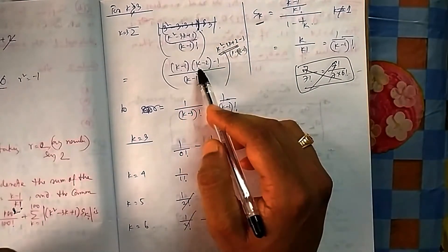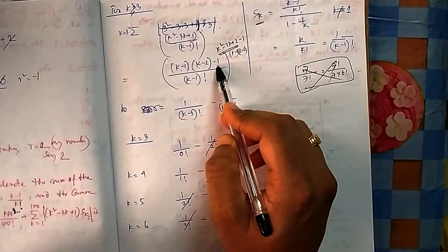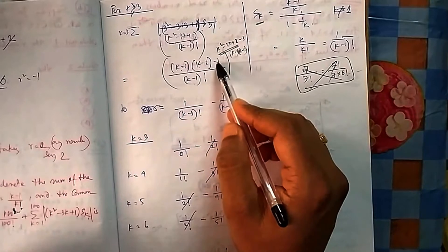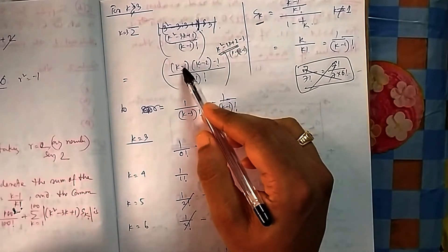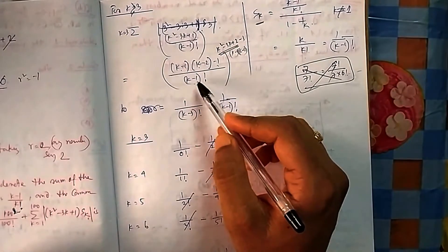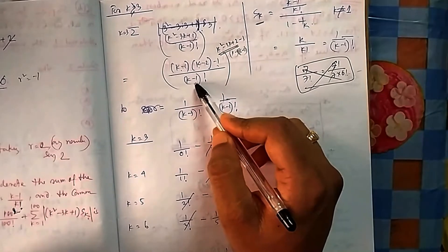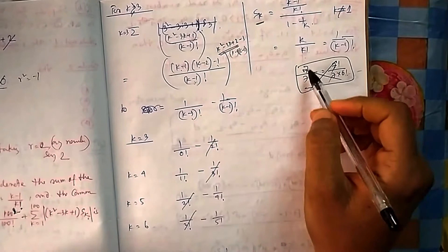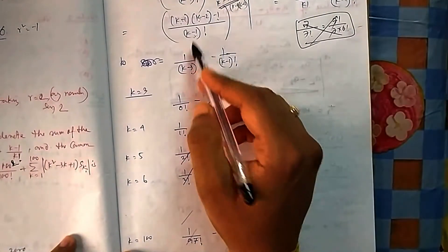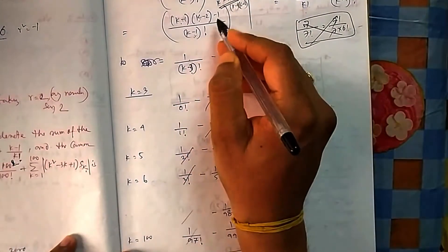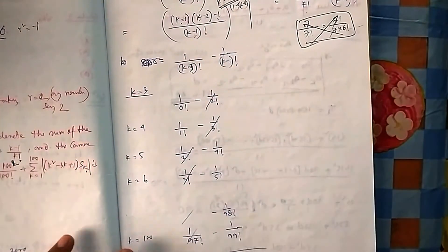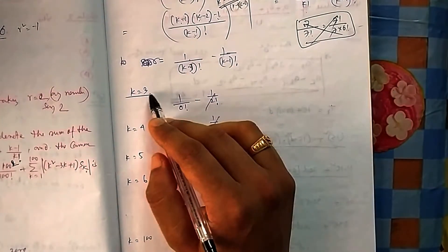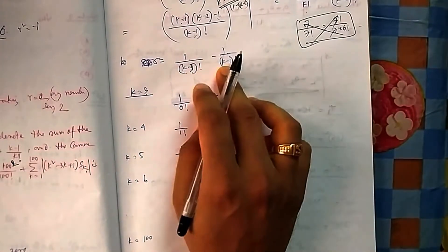Writing it out: (k-1)(k-2)/(k-1)! minus 1/(k-1)!. The first part simplifies — (k-1)/(k-1)! gives 1/(k-2)!, and then (k-2)/(k-2)! gives 1/(k-3)!. So one part becomes 1/(k-3)! and the other is -1/(k-1)!. This formula is valid for k ≥ 3; we cannot substitute k=1 or k=2 into this expression.